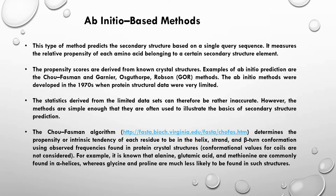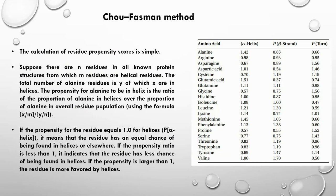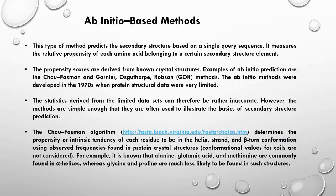The Chou-Fasman algorithm is a primitive method and falls into ab initio based prediction. This algorithm is based on a propensity table which contains propensity scores of each residue for falling into either alpha helix, beta strand, or beta turn. It determines the intrinsic tendency of each residue to be in helix, strand, or beta turn confirmation. These propensities were learned by studying structures already present in databases like the PDB.